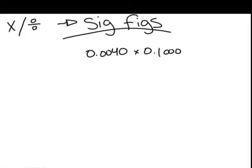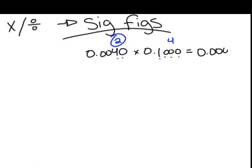So, another example. We have 0.0040 times 0.1000. Notice that the first number only has two sig figs. The second has four. Therefore, your answer can only have two sig figs.